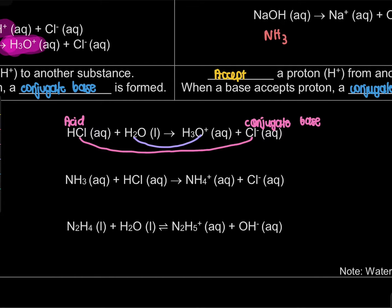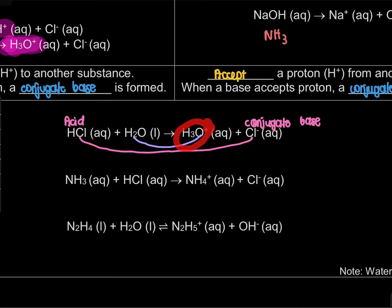Now looking at H₂O: it becomes H₃O⁺, which means one H has been added — so it has accepted a proton. That means H₂O is acting as a base here, and H₃O⁺ is the conjugate acid.